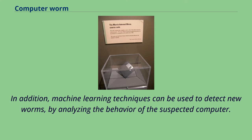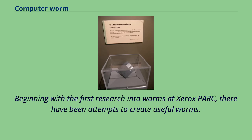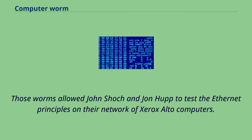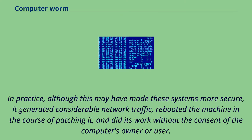A helpful worm or anti-worm is a worm designed to do something that its author feels is helpful, though not necessarily with the permission of the executing computer's owner. Beginning with the first research into worms at Xerox PARC, there have been attempts to create useful worms. Those worms allowed John Schoch and John Hupp to test the Ethernet principles on their network of Xerox Alto computers. Similarly, the Nachi family of worms tried to download and install patches from Microsoft's website to fix vulnerabilities in the host system by exploiting those same vulnerabilities. In practice, although this may have made systems more secure, it generated considerable network traffic, rebooted the machine in the course of patching it, and did its work without the consent of the computer's owner or user.